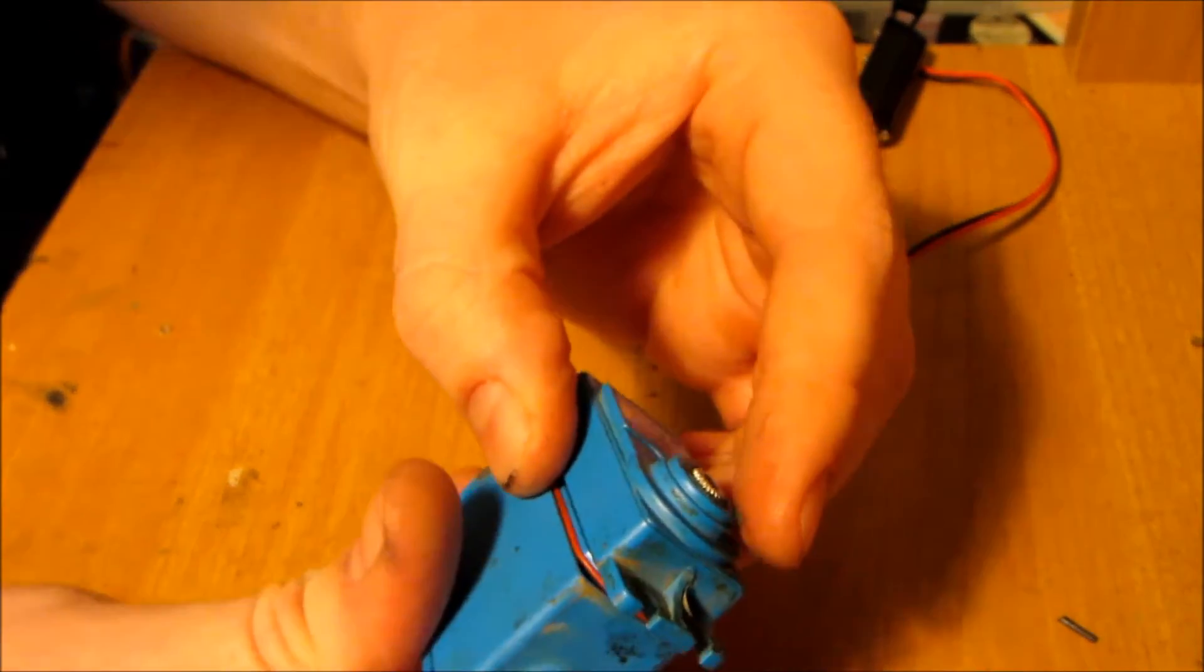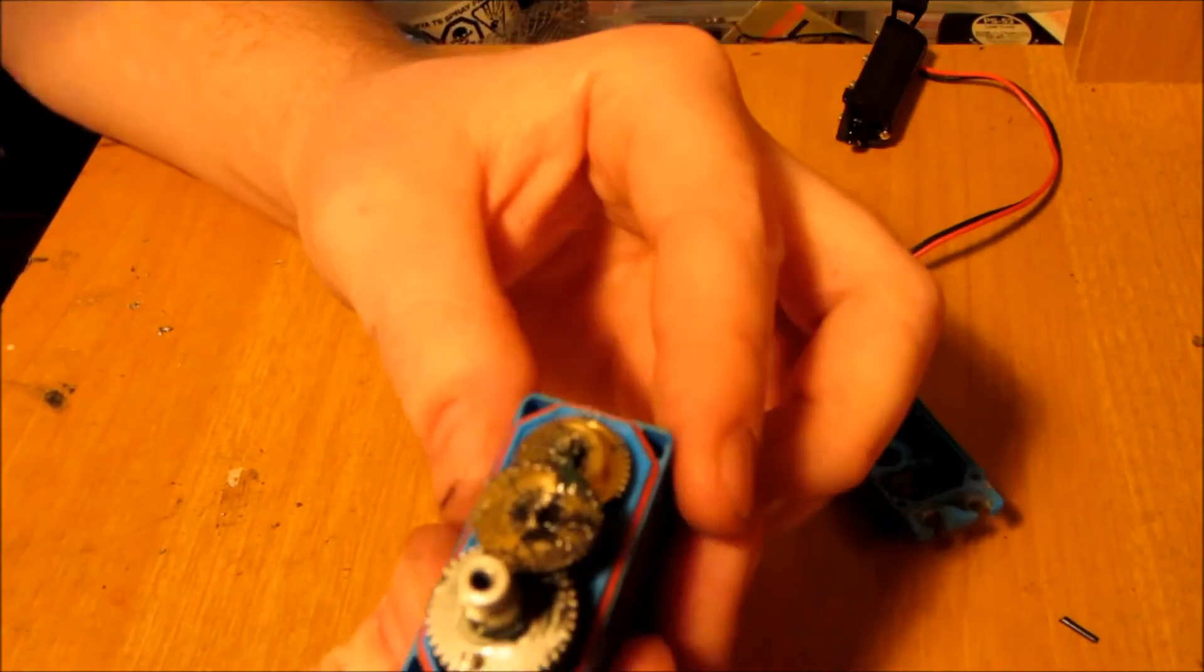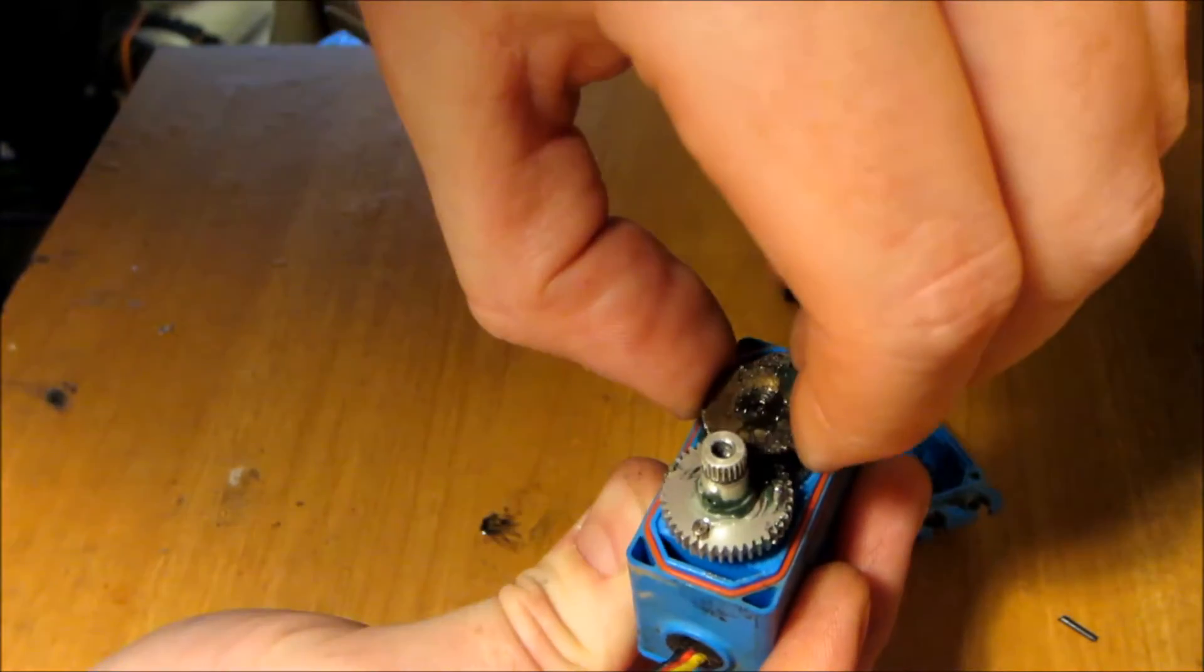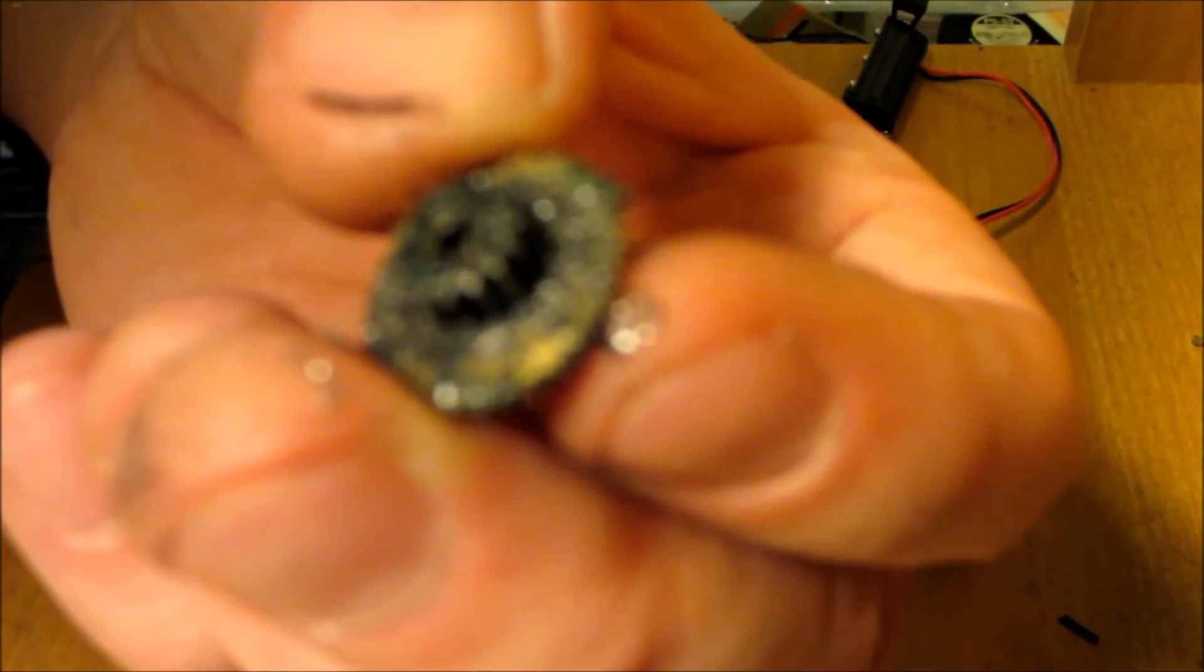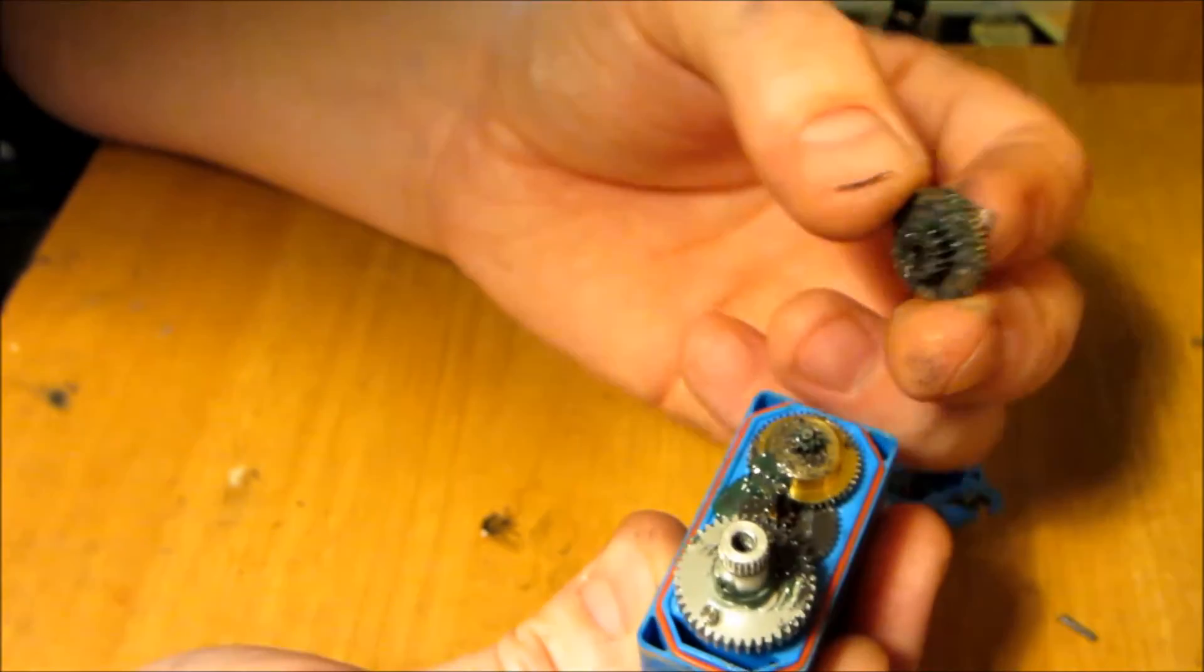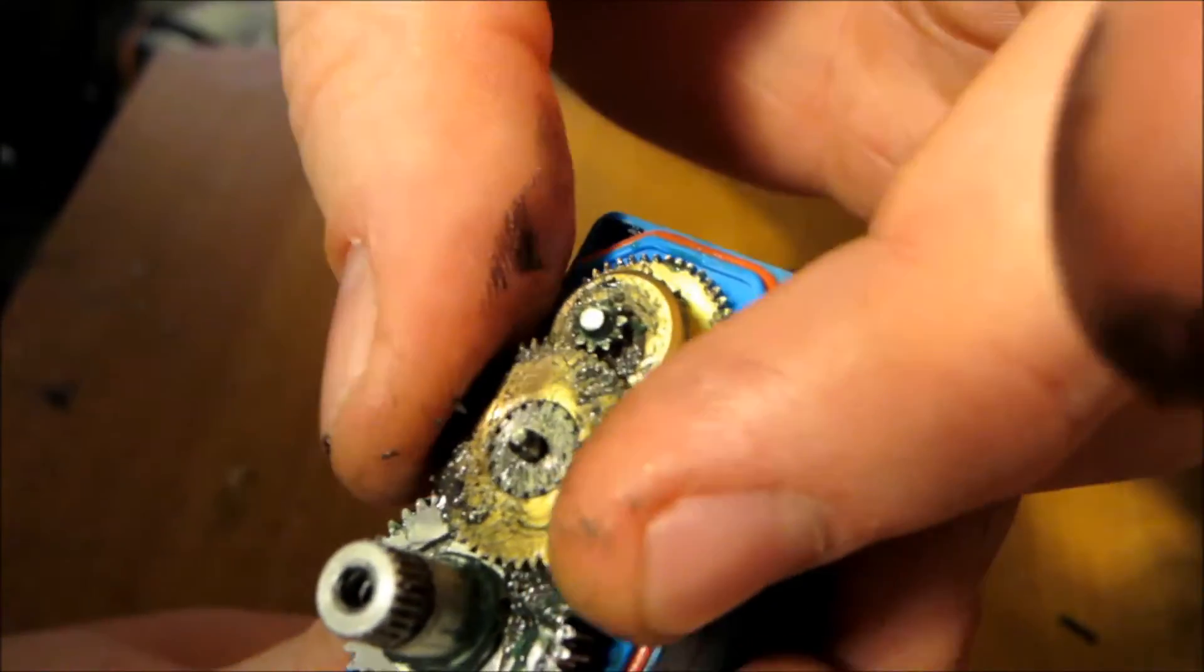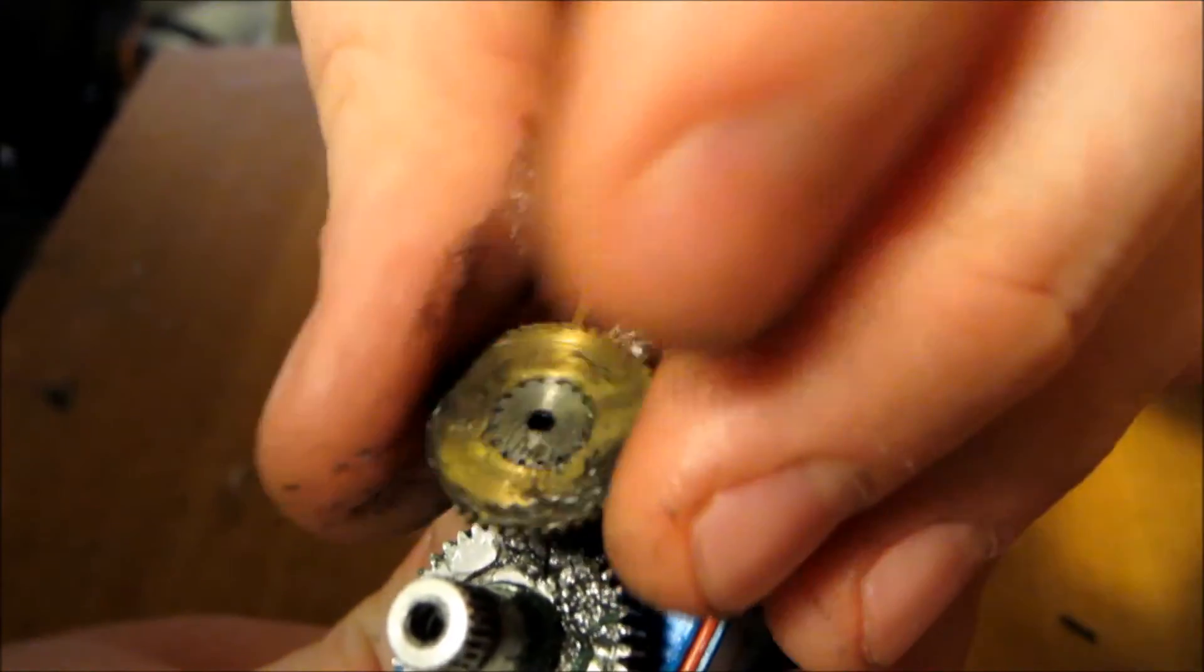Well, what usually happens is the center gear here strips out. I don't know if you can see that, but on this side here it's all stripped out, and that rides along this gear here. It used to go like that. It's all stripped, so all you do is take that gear off.